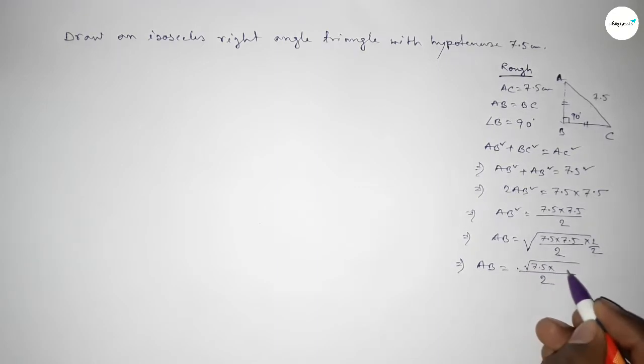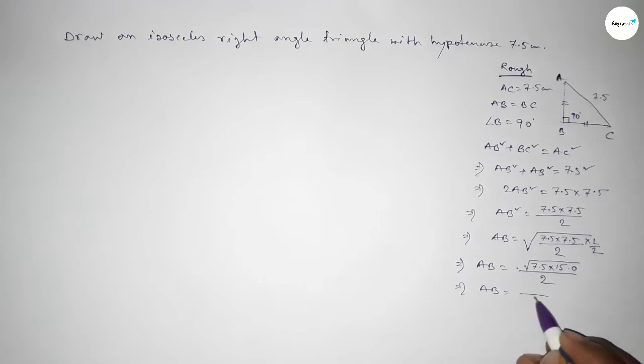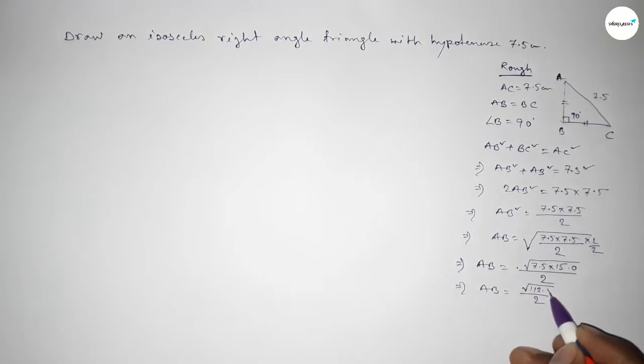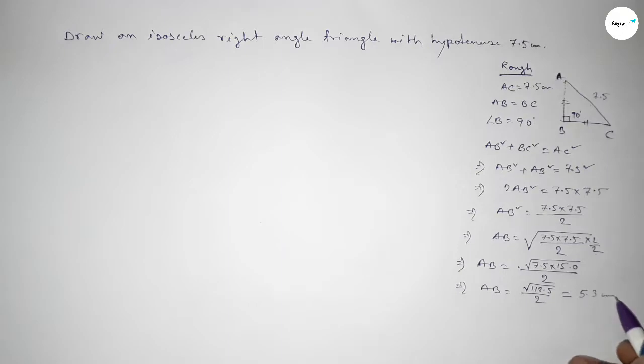Calculating 7.5 times 2 equals 15.0. Again, AB equal to multiplying these terms, this is 118.5 over 2, so this is approximately 5.3 centimeters. And since the square root of 118.5 equal to approximately 10.6 centimeters divided by 2.